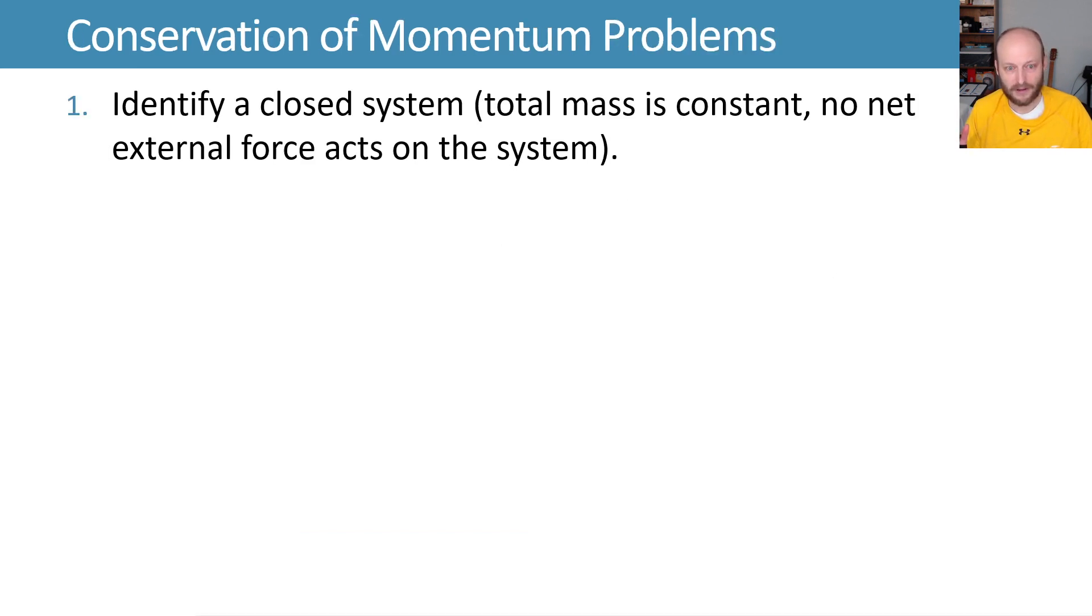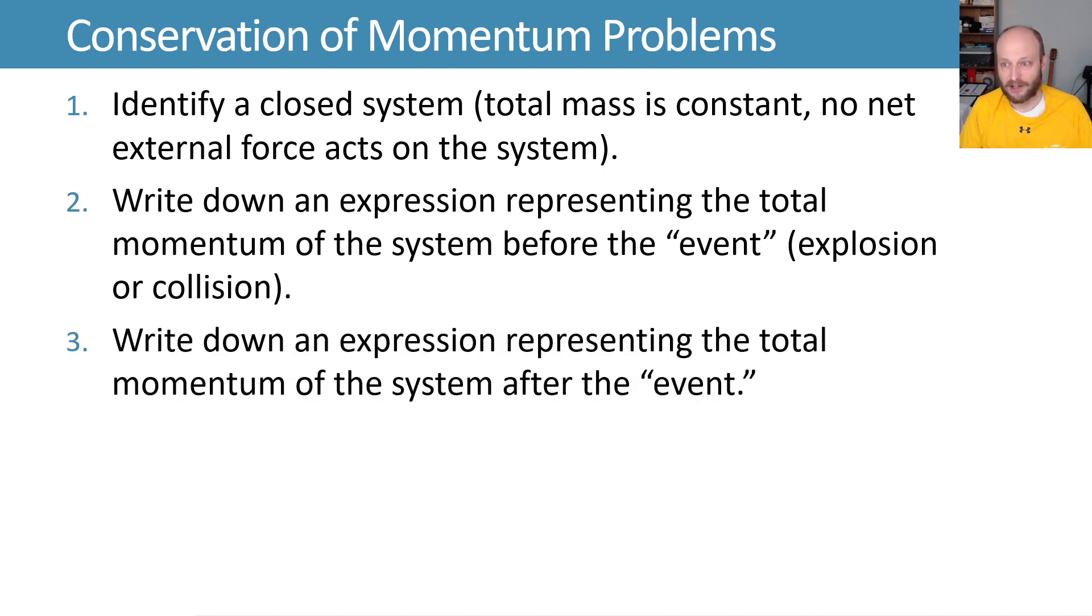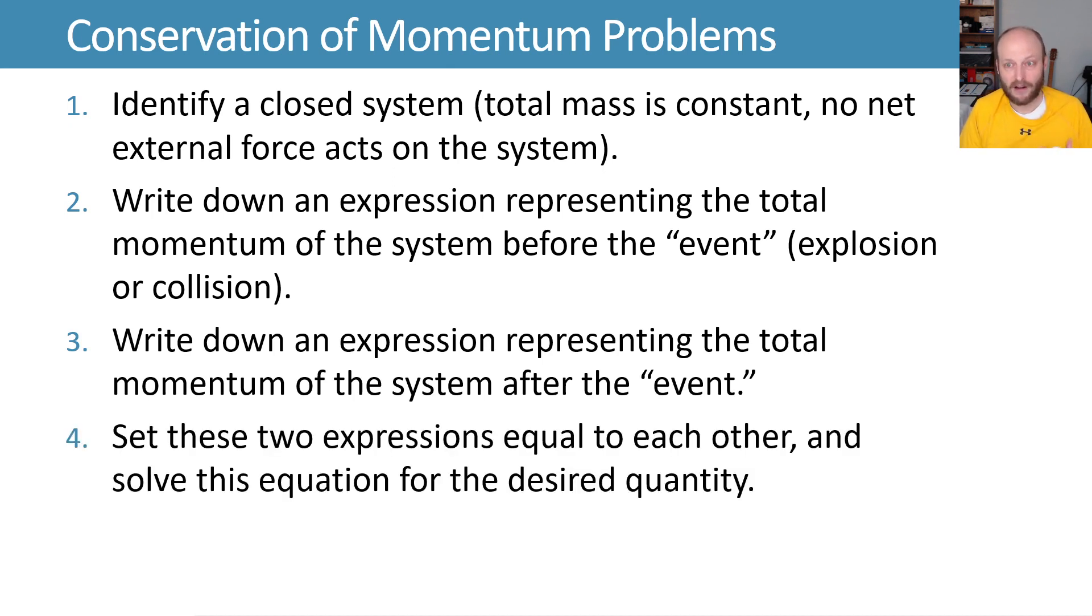And in doing so, generally we'll start by identifying our system. And we want a closed system where our total mass is constant with no net external forces acting on it, so that we can write an expression representing the total momentum of the system before our event, explosion, collision, what have you. And we can write an expression representing the total momentum of the system after. Then we'll set those expressions equal to one another and solve for the thing we want to find. So that's the basics of using conservation of momentum to solve problems.